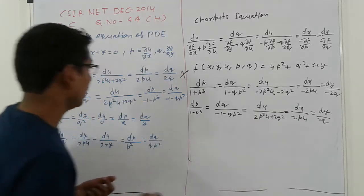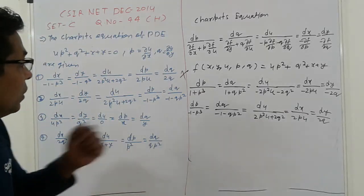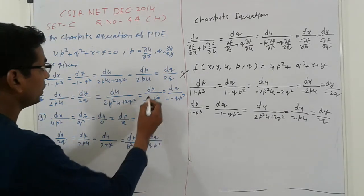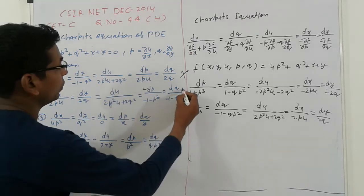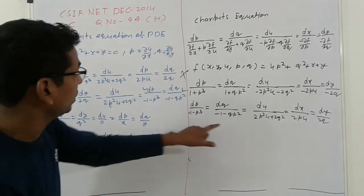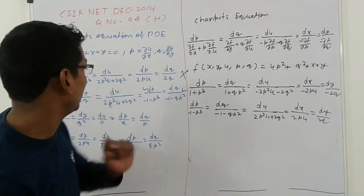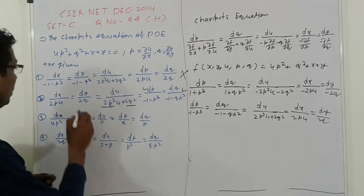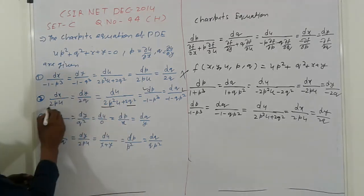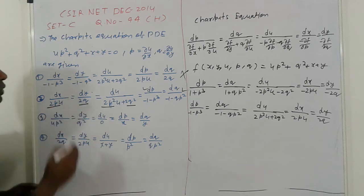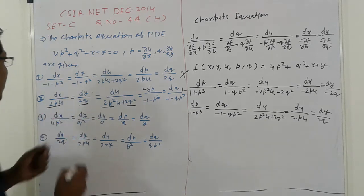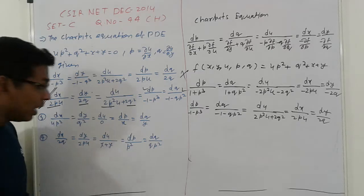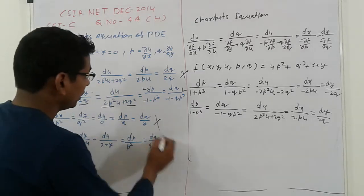So checking the arrangement: du upon dp first, dp here, dq here: 1 minus 1 QP squared x, du: 2P squared and 2Q squared x, dx: 2PU, dy: 2Q. So it means the second option is correct.